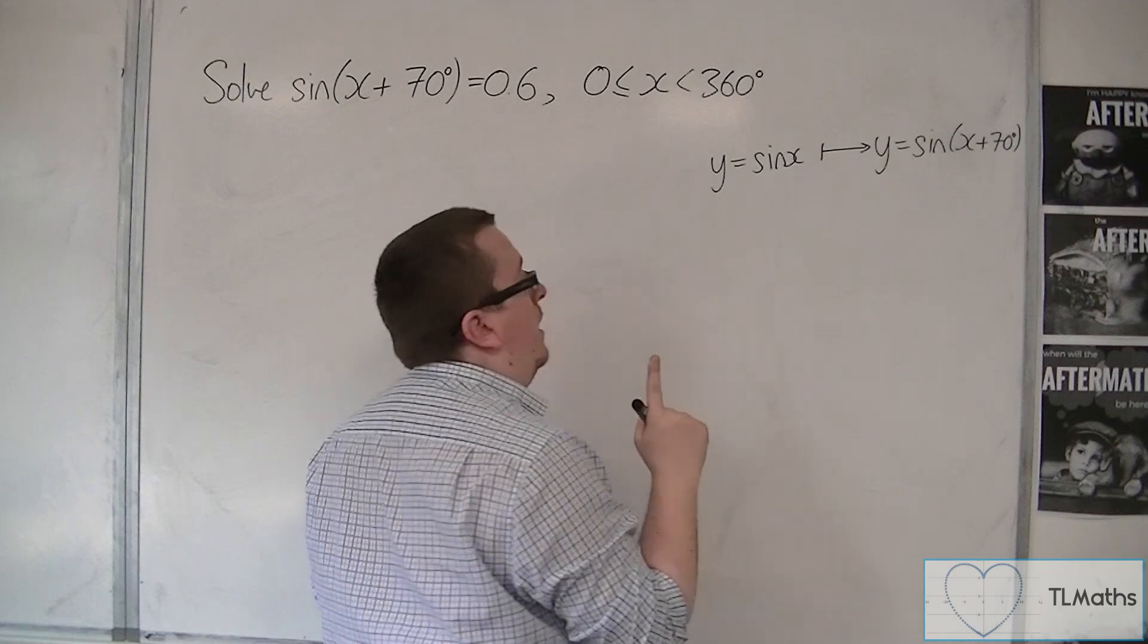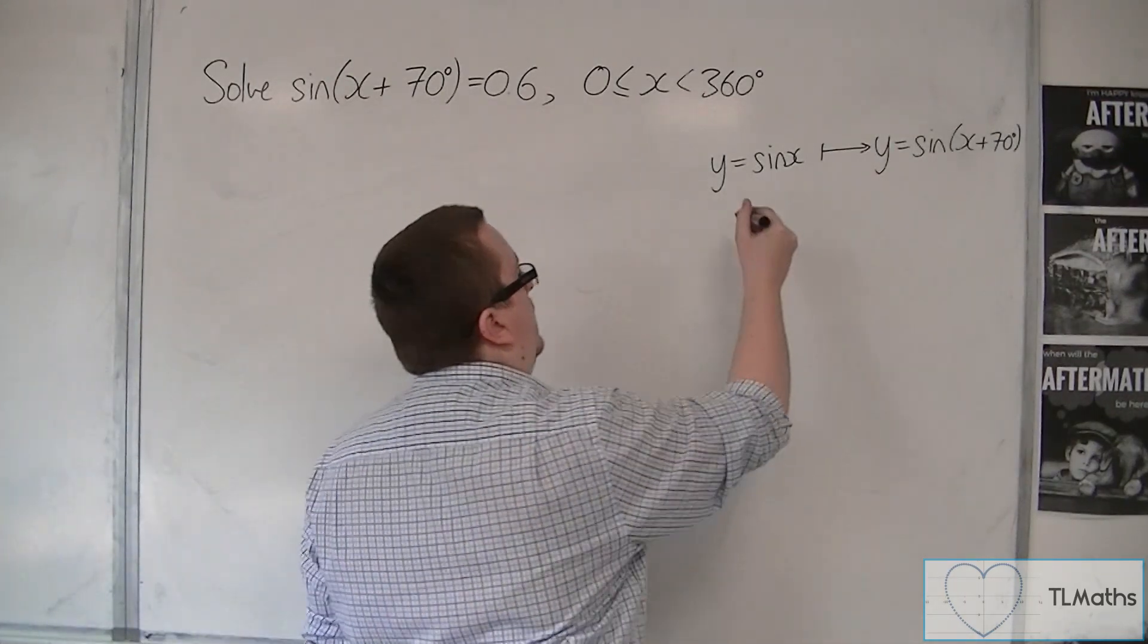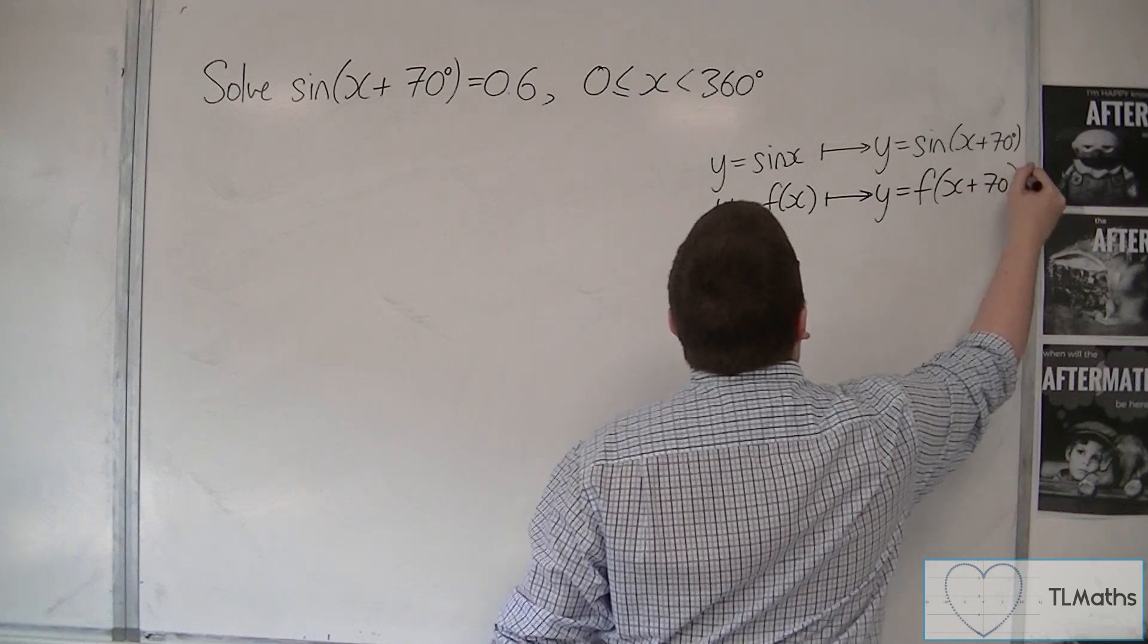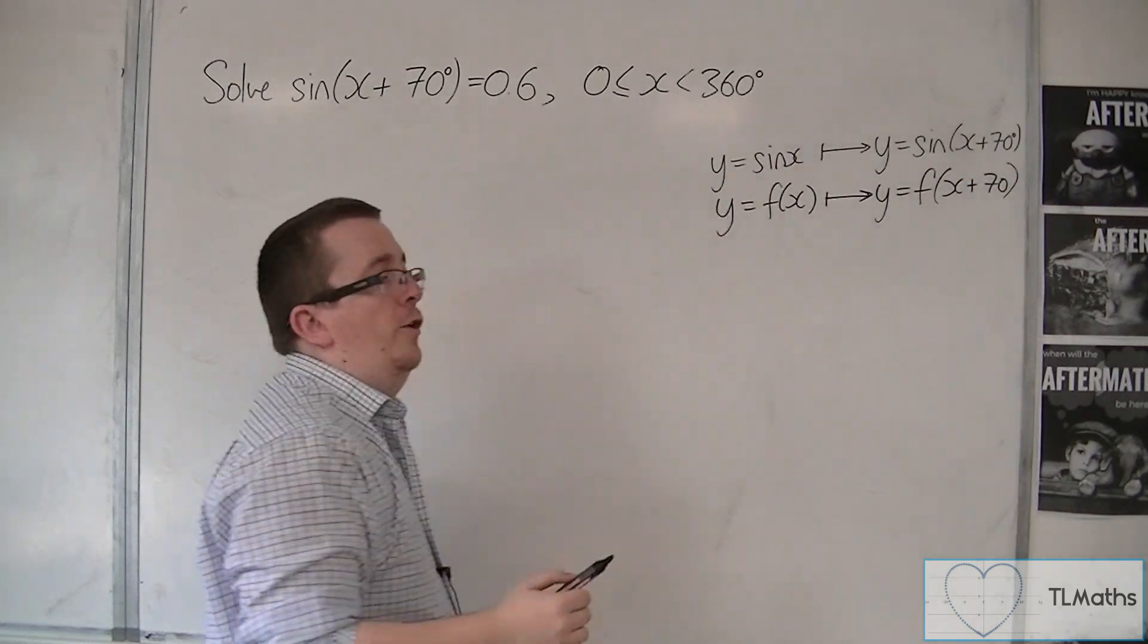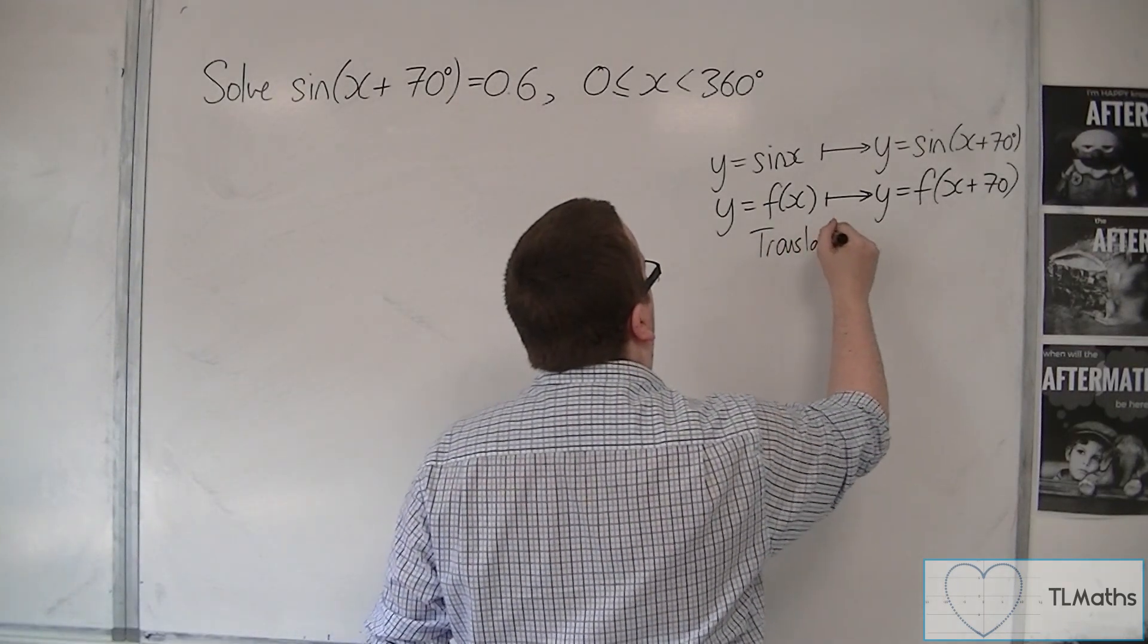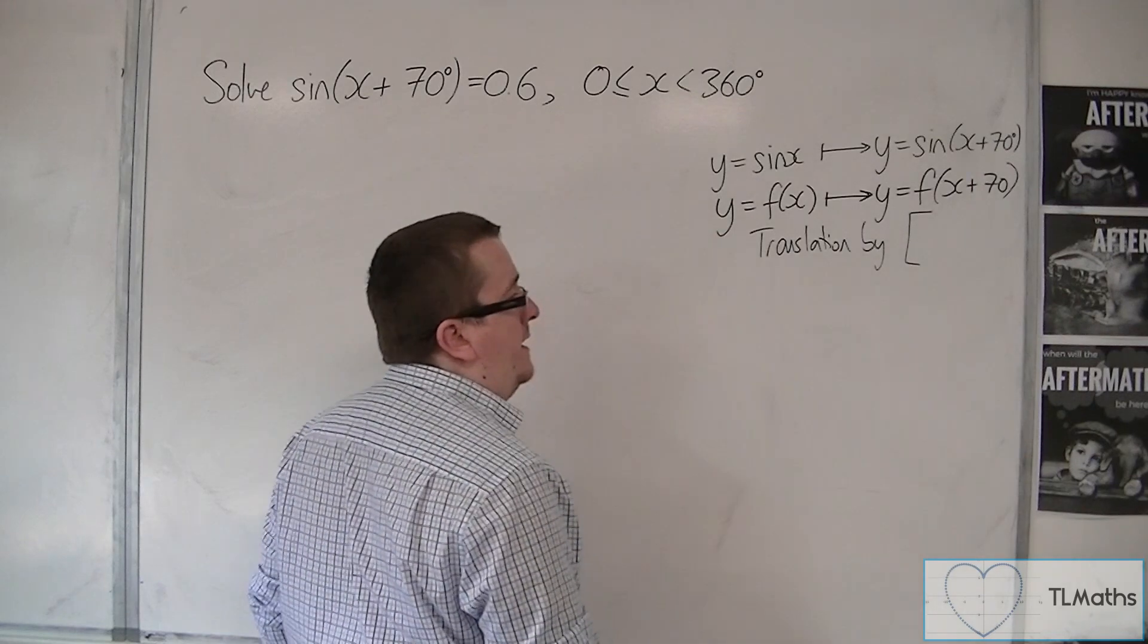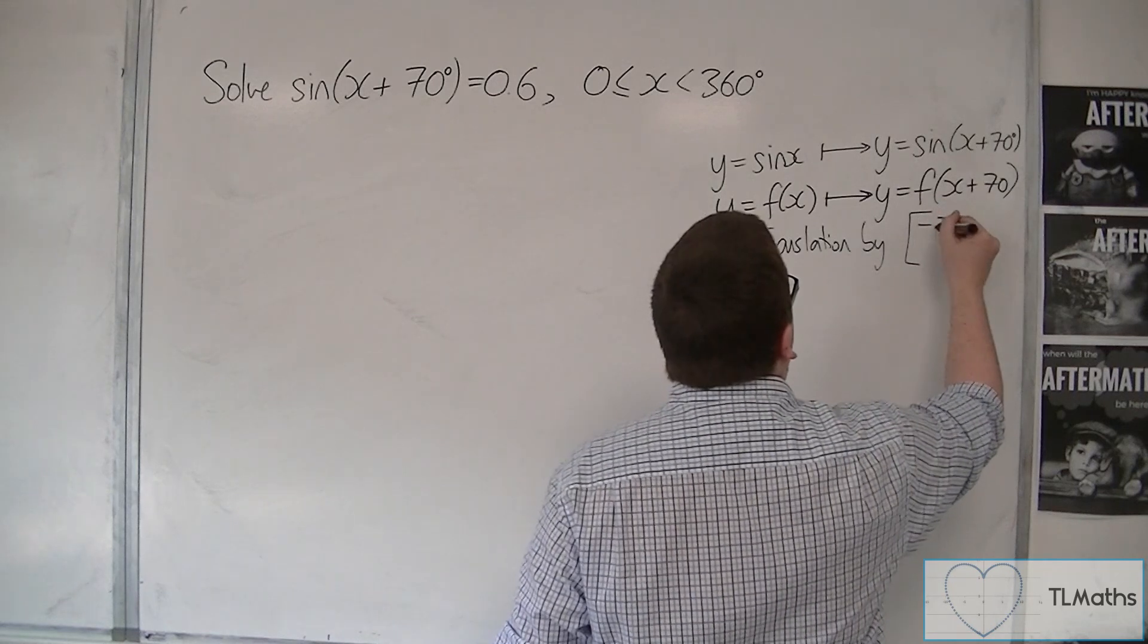We should identify this with the previous section, where we were looking at functions that were transformed like this. And the fact that we've got this plus a number involved, that means it's a translation by, because we've got plus 70 inside the bracket, that means that it's moving minus 70 in the x direction.